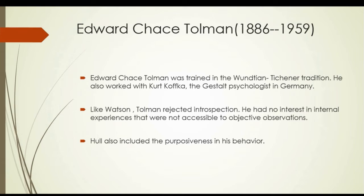Tolman originally proposed two kinds of intervening variables: demand variables and cognitive variables. The demand variables are essentially motives and include sex, hunger, and demand for safety in the face of danger. The cognitive, or know-how, variable refers to ability and includes perception and motor skill.